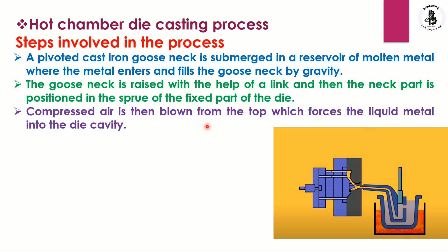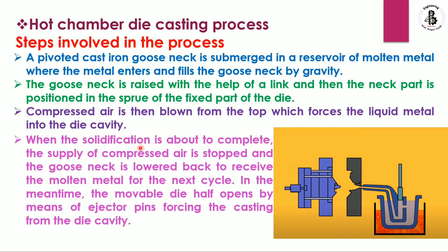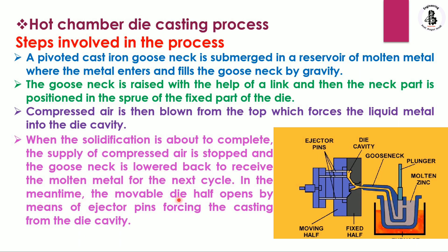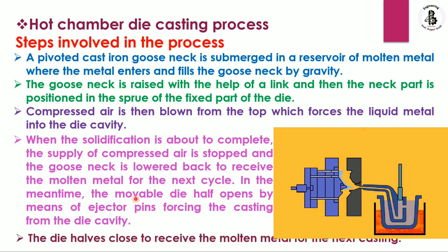Compressed air is then blown from the top, forcing the liquid metal into the die cavity. When solidification is nearly complete, the supply of compressed air is stopped and the gooseneck is lowered back to receive more molten metal for the next cycle. In the meantime, the movable die opens and the ejector pins force the casting out of the die. The die halves then close to receive molten metal for the next casting cycle.